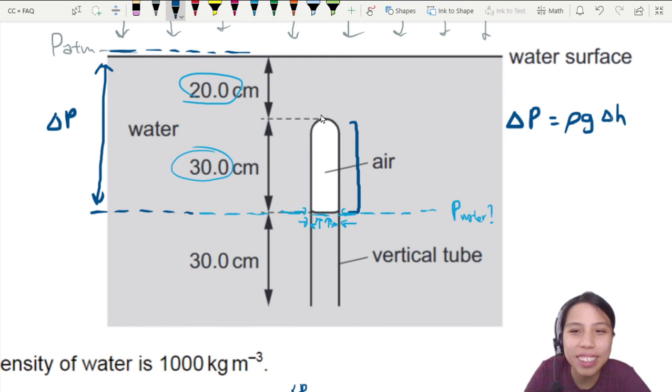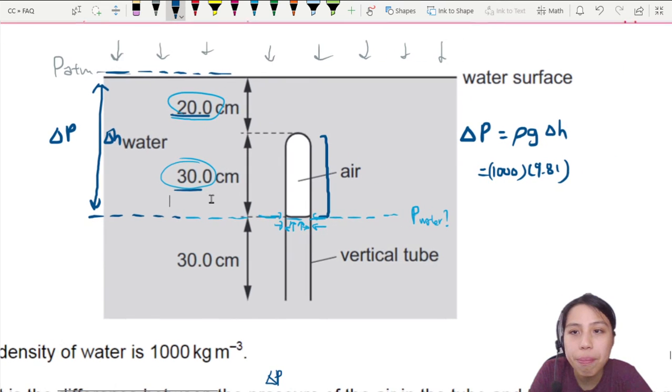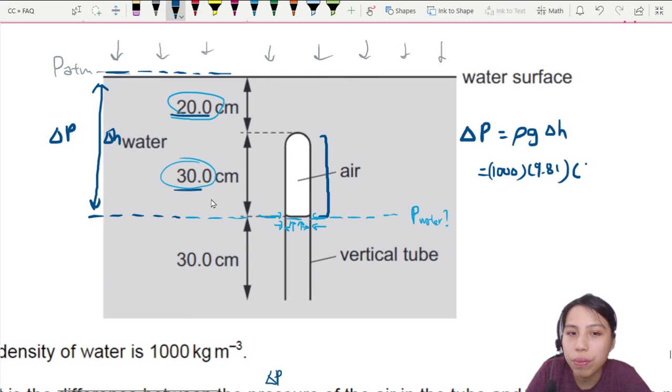So what is the delta h? To find that, we need to take the density 1000, g 9.81, and the delta h, which actually is including two parts, this delta h, 20 cm and 30 cm. So that is the total of 50 cm. So we can write here 50 times 10 negative 2, and that will be in meters.